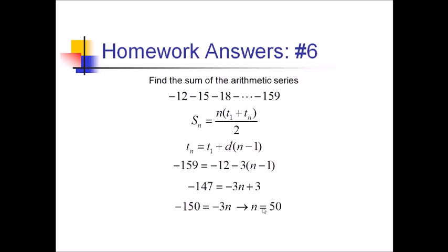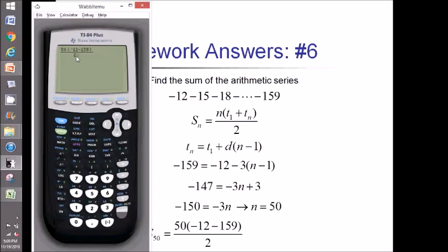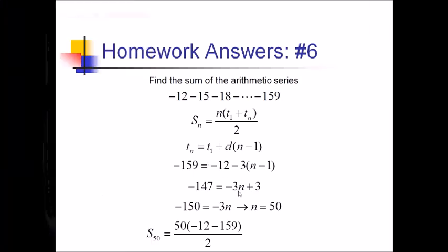Well, that's nice how that worked out. So plugging stuff in, I've got 50 times negative 12 plus negative 159 all over 2. And let's see what the calculator makes of this. That comes out to negative 4,275. Glad I didn't do that in my head.